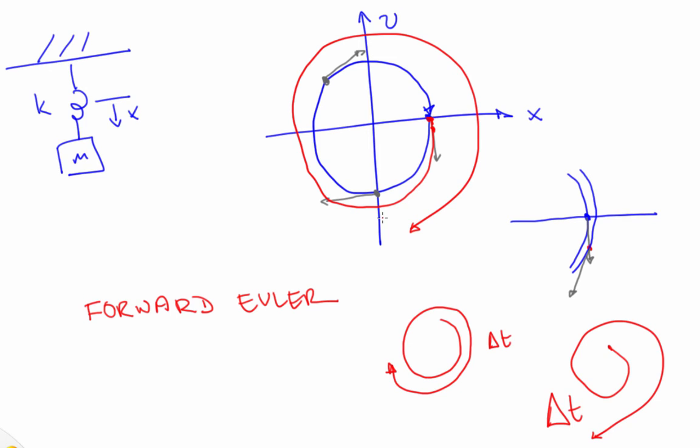So for a small time step, the spiral will be pretty tightly wrapped, and for bigger time steps, it will spiral out more quickly.